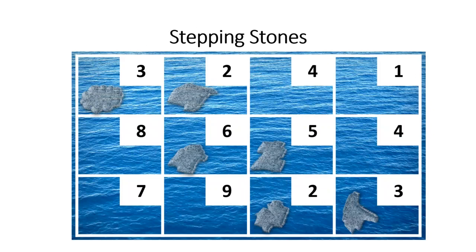To introduce the idea behind the stepping stone method, let us replace the allocated amounts with stones. The stepping stone algorithm is based on tracing a closed path starting from each unoccupied cell. You trace a closed path from that unoccupied cell and change direction only on occupied cells — that is, you change direction when you step on each stone. You cannot step on a cell without a stone, because if you do, you will sink into the river.